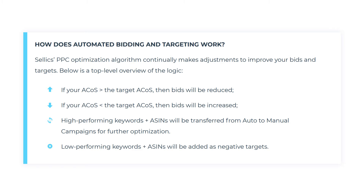So how does automated bidding and targeting work? Selex's PPC optimization algorithm is continually making adjustments to improve your bidding and targeting. Here's a top-level overview of the four key areas of logic the system uses. Firstly, if your ACoS is greater than your target ACoS, the bids will be reduced. For instance, if you have a target ACoS of 30% for an ASIN and your current ACoS is 40%, the bids of that target will be reduced.